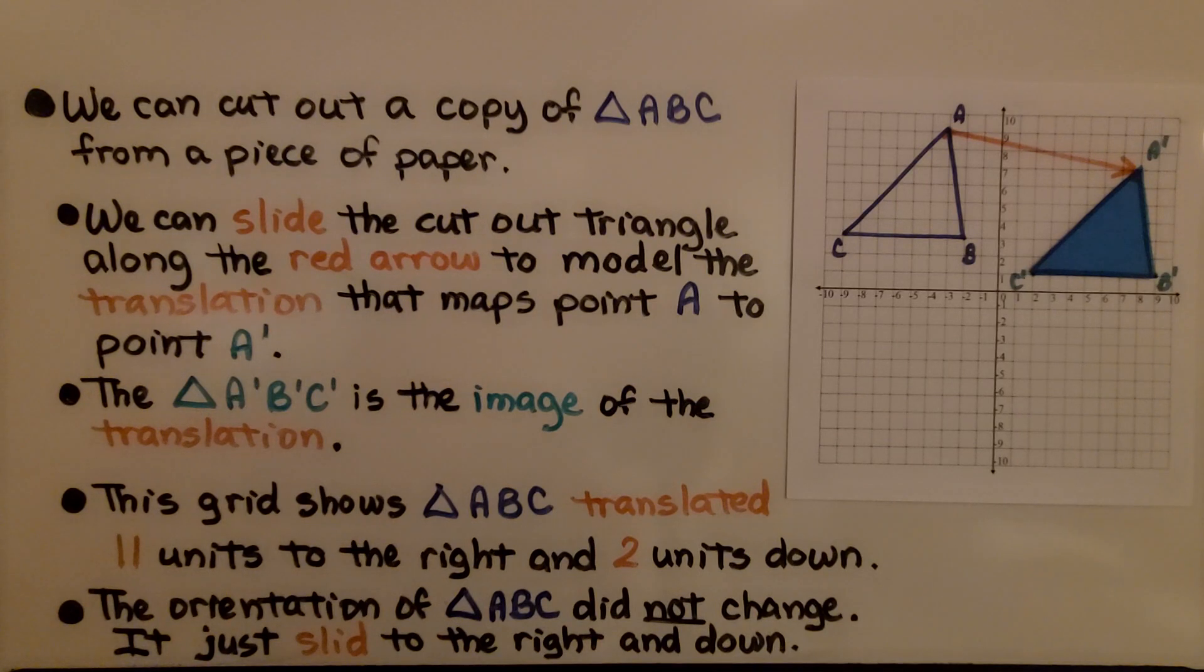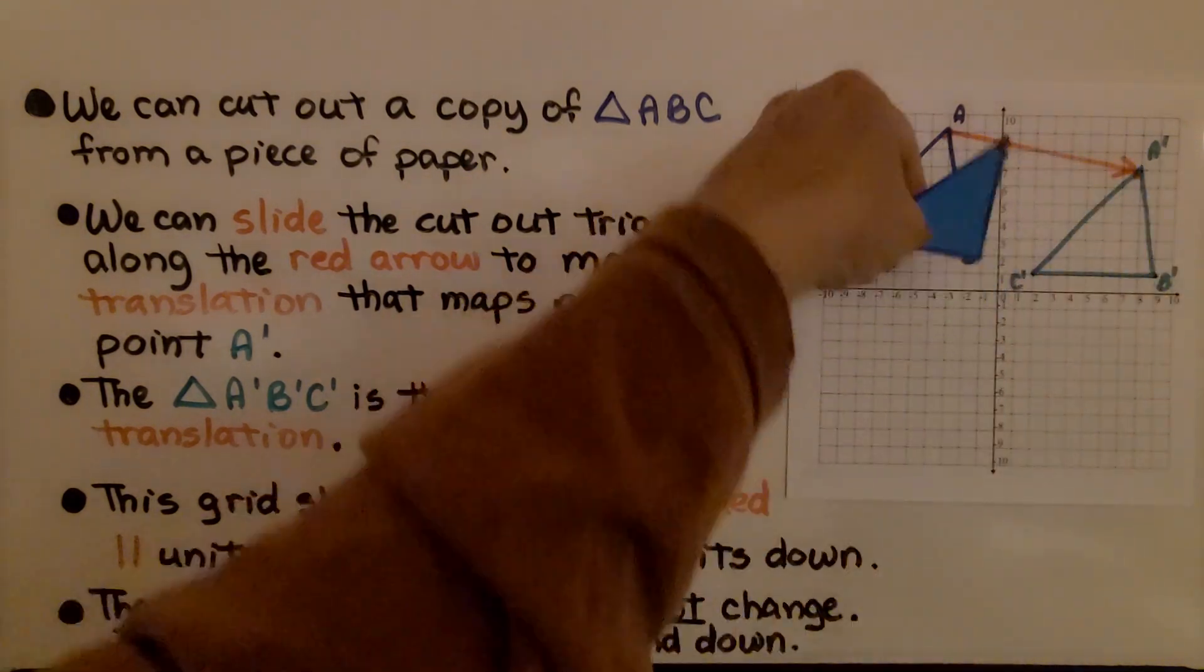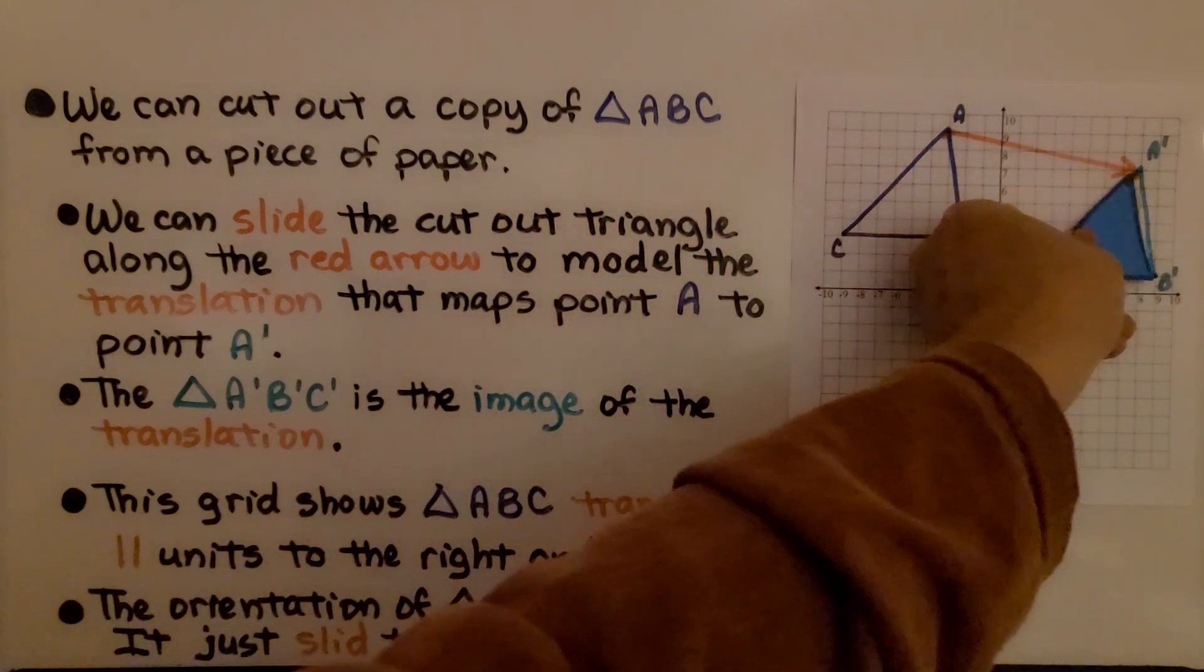The orientation of triangle ABC, the blue one, did not change. It just slid to the right and down. We didn't spin it around, we didn't flip it—it just slid like that.